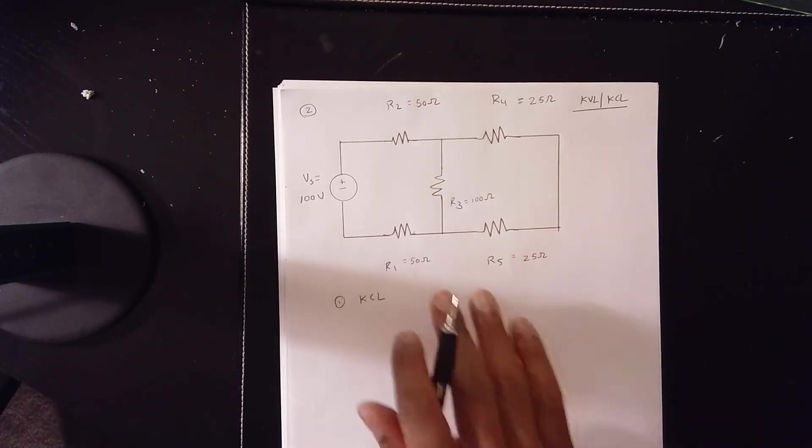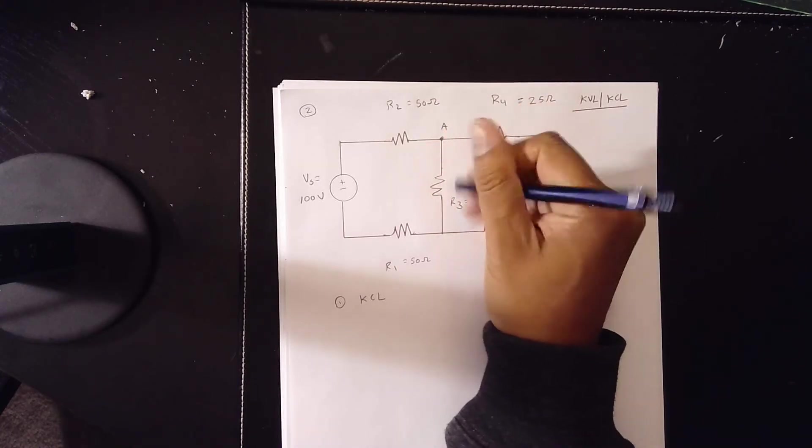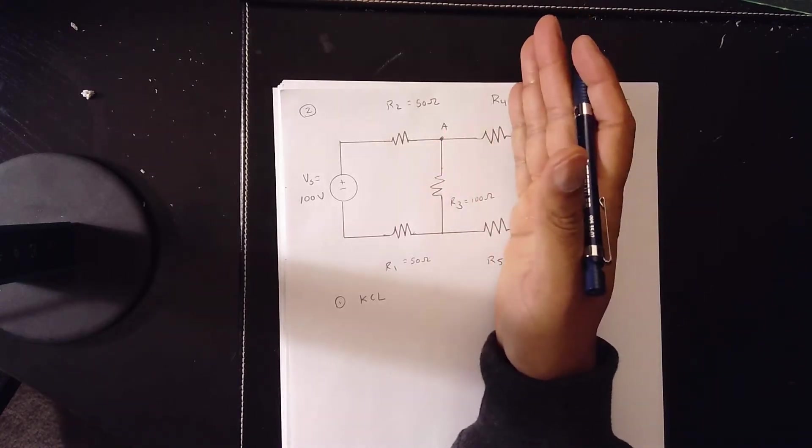KCL will be the first step you do, KCL, and it will be at node voltage A. And because of these equations are going to be the same, you'll only use one node.